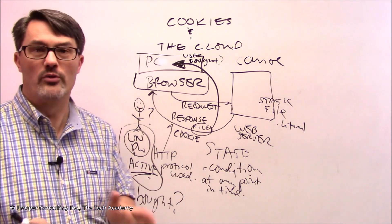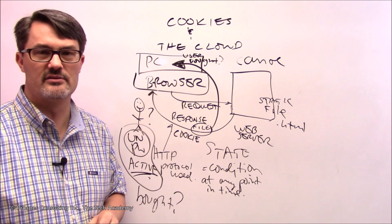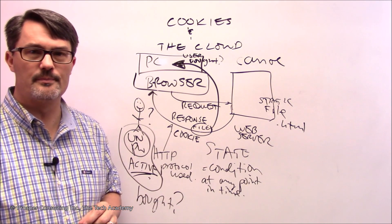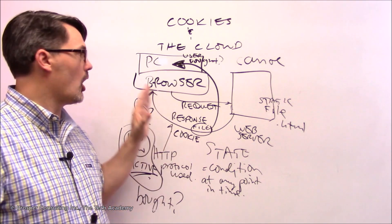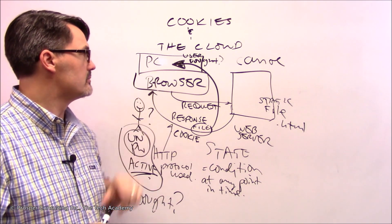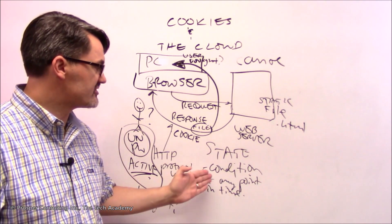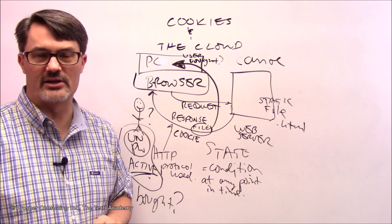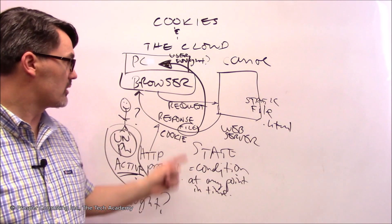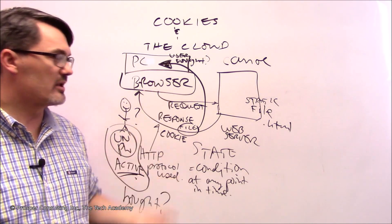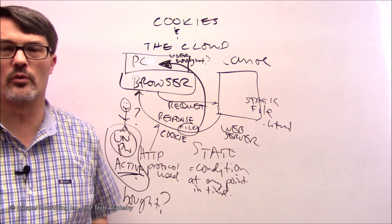The file that's sent from the web server to be stored on the individual's computer is called a cookie. Some of you may know this already. Some of you may have seen the word cookie referred to on different websites. For some of you, this may be completely new. A cookie is essentially a file that can be stored on the browser's computer to store data that a web server would need about certain state information.